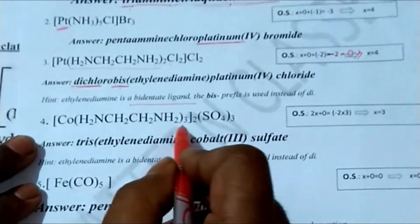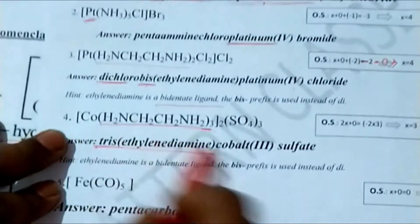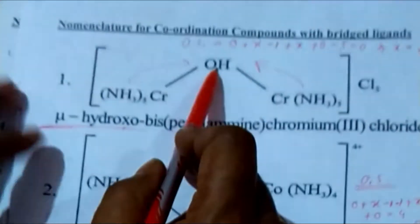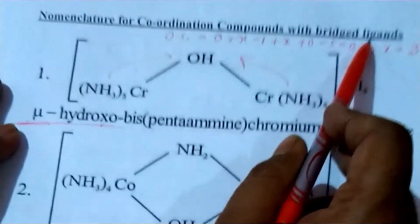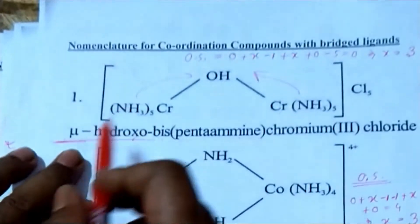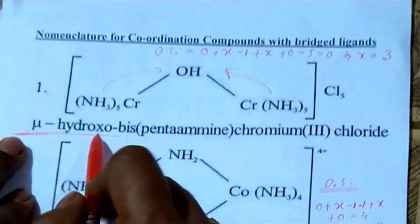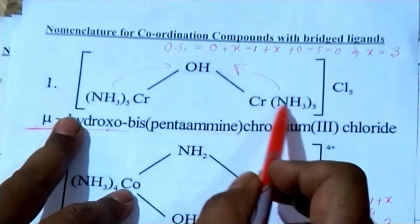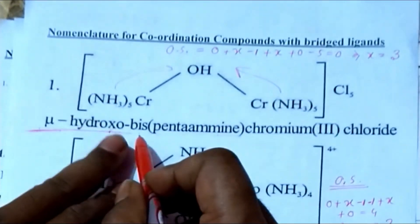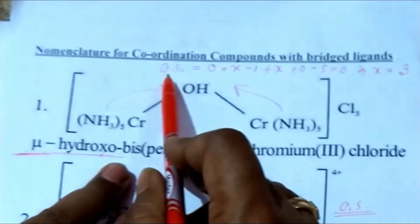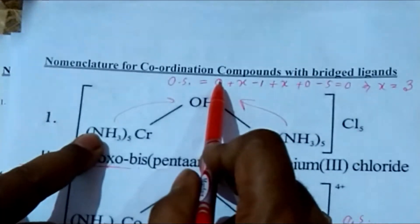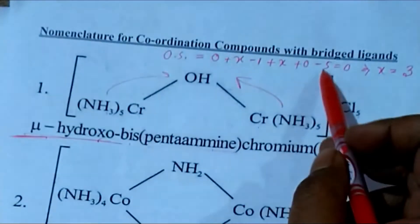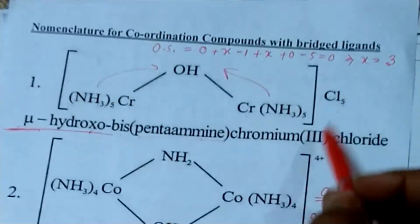The fourth example involves di amine cobalt sulphate. Then a hydroxide connected to two chromium atoms — this is a bridging ligand. For bridging ligands we use the prefix 'mu' (μ). Oxidation state: 0 for NH₃ (neutral), x for chromium, −1 for hydroxo, x for the second chromium, 0 for amine, and −5 for the chlorines, equal to 0; x = 3. The name: mu-hydroxo bis(pentaamminechromium)(III) chloride.